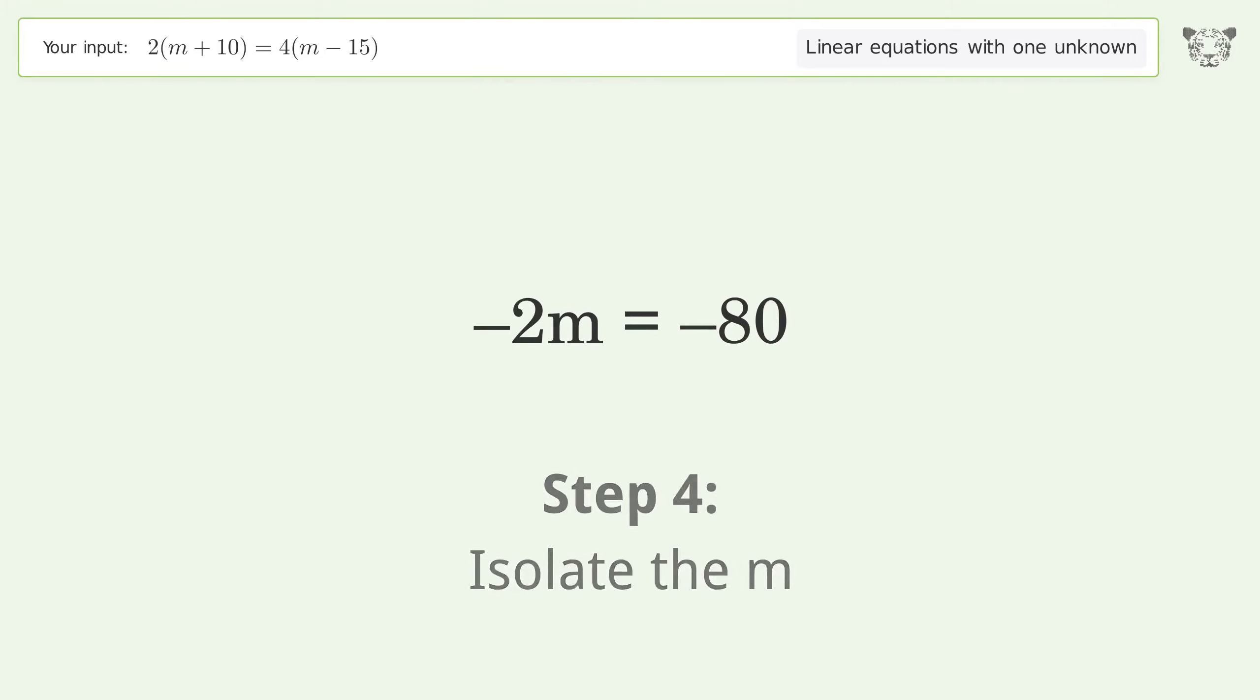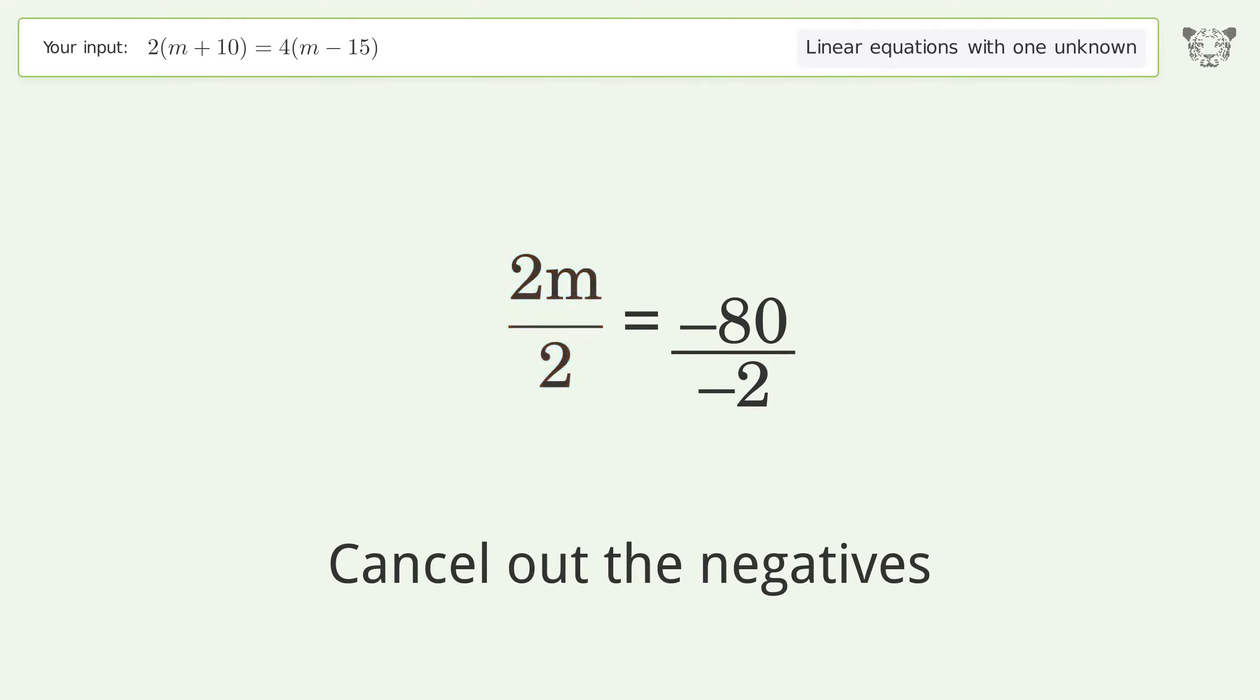Isolate the m. Divide both sides by negative 2. Cancel out the negatives and simplify the fraction.